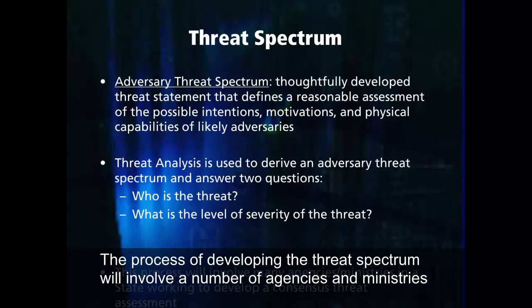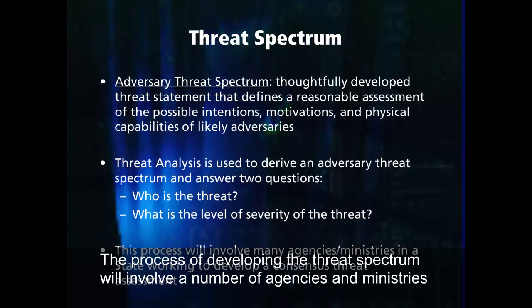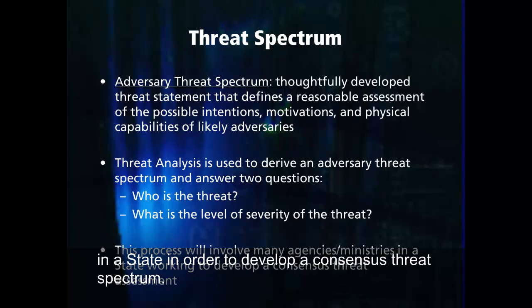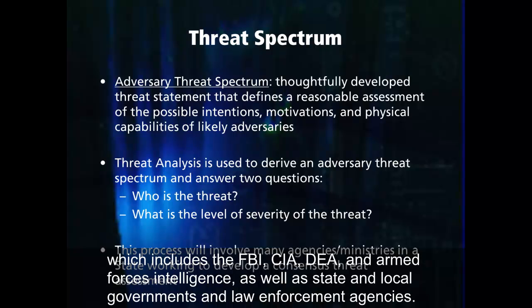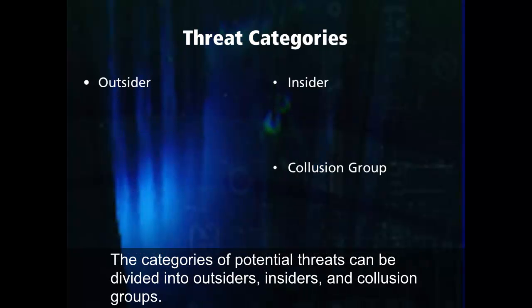The process of developing the threat spectrum will involve a number of agencies and ministries in a state in order to develop a consensus threat spectrum. For example, in the United States, the threat assessment will include information from the intelligence community, which includes the FBI, CIA, DEA, and Armed Forces Intelligence, as well as state and local governments and law enforcement agencies. The categories of potential threats can be divided into outsiders, insiders, and collusion groups.